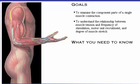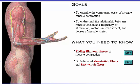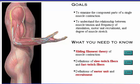Here's what you need to know: the sliding filament theory of muscle contraction, the definitions of slow twitch fibers and fast twitch fibers, and the definitions of motor unit and recruitment. To review any of these three subjects, click the appropriate link button. If you use a link button, you can return by clicking the return button. To see definitions of terms, click the bold red words.